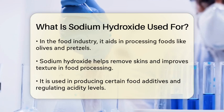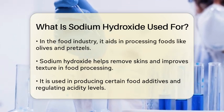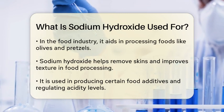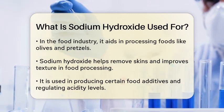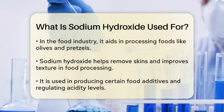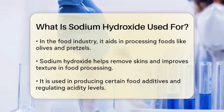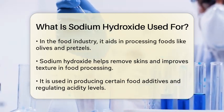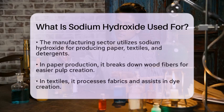In the food industry, sodium hydroxide serves multiple purposes. It is used in the processing of foods like olives and pretzels, where it helps to remove skins and enhance texture. Additionally, it is involved in the production of certain food additives and can even be used to regulate acidity levels in various products.